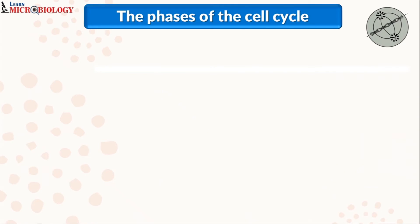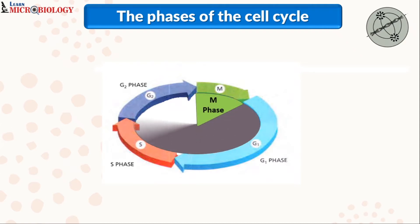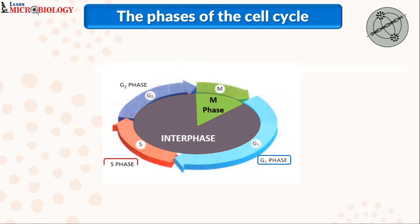Let us understand the different phases of the cell cycle. A cell cycle looks somewhat like this — it consists of various phases which take place in a cyclic manner. The cell cycle consists of two main phases: one is the M phase and the second one is called the interphase. The interphase consists of the G1 phase, the S phase, and the G2 phase.